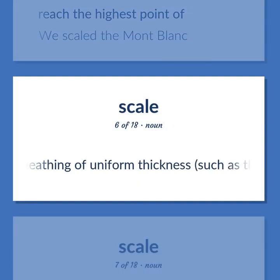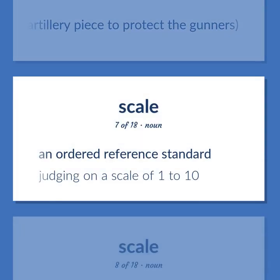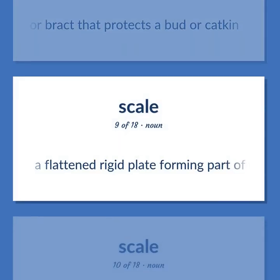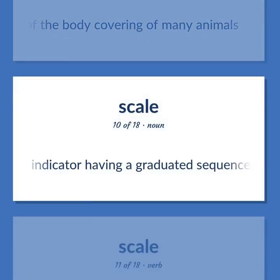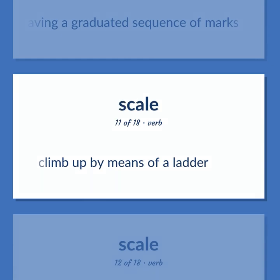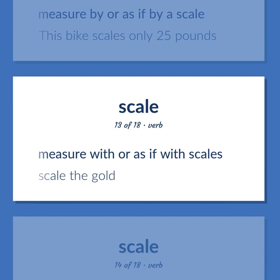A metal sheathing of uniform thickness, such as the shield attached to an artillery piece to protect the gunners. An ordered reference standard. Judging on a scale of 1 to 10. A specialized leaf or bract that protects a bud or catkin. A flattened rigid plate forming part of the body covering of many animals. An indicator having a graduated sequence of marks. Climb up by means of a ladder. Measure by or as if by a scale. This bike scales only 25 pounds. Measure with or as if with scales. Scale the gold.